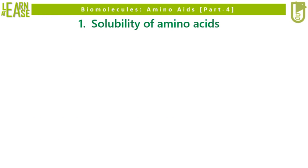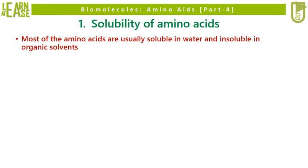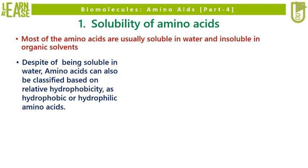The first property of amino acids that I will explain is solubility. Most amino acids are usually soluble in water and insoluble in organic solvents. Despite being soluble in water, amino acids can also be classified based on relative hydrophobicity, as hydrophobic or hydrophilic amino acids.